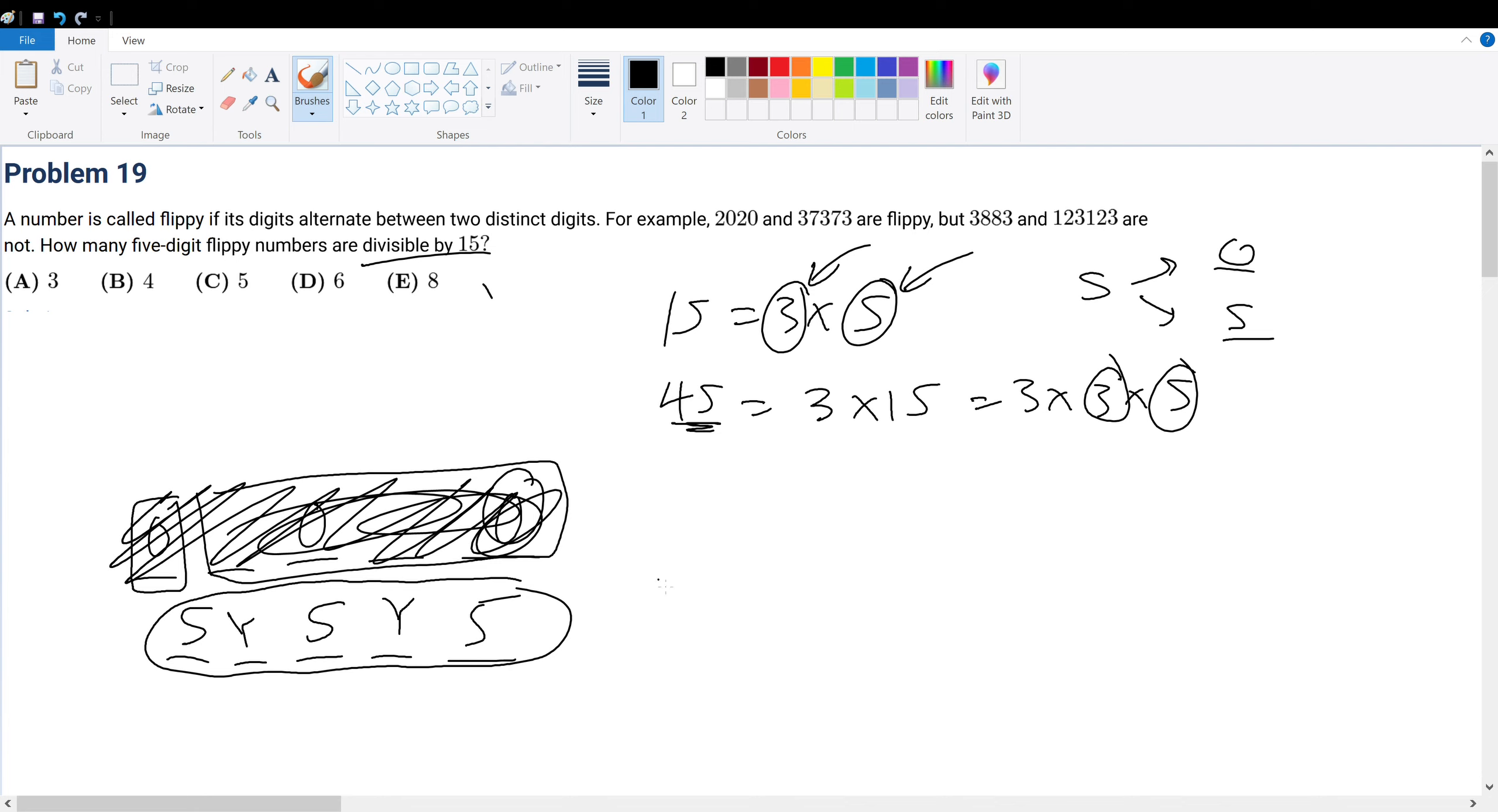What is the divisibility rule for 3? The sum of the digits must be a multiple of 3. For example, consider 45: 4 plus 5 equals 9. Since that's the digits, and 9 equals 3 times 3, since that's a multiple of 3, 45 is divisible by 3.